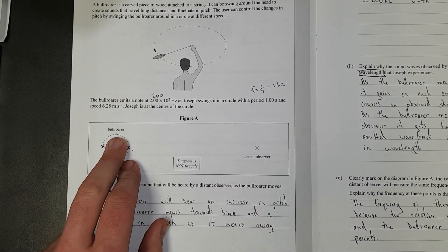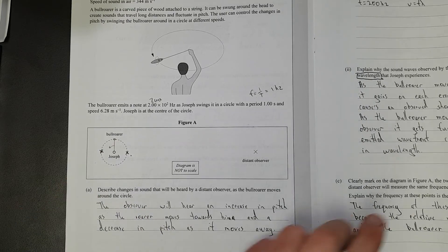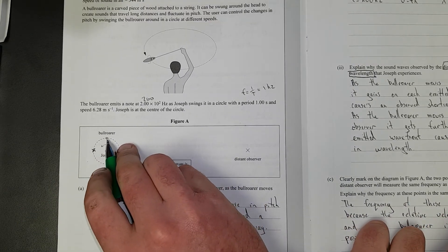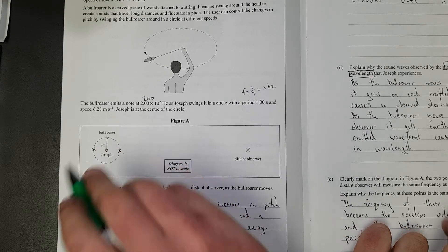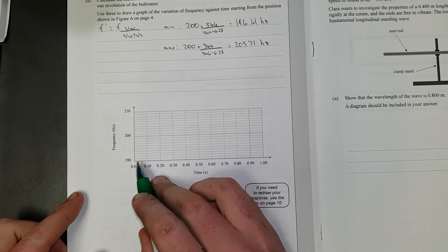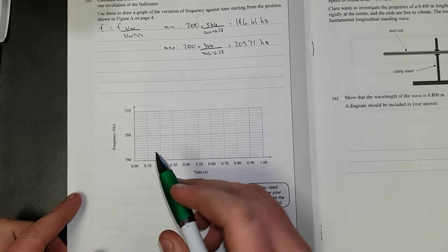Over here, the bullroarer is moving away. If it's moving away, it's going to be moving away at the most here. So we're going to start at the lowest frequency. The lowest frequency is 196. So I've got 200. I need to go almost full down. So 1, 2, 3, 4. There we go.